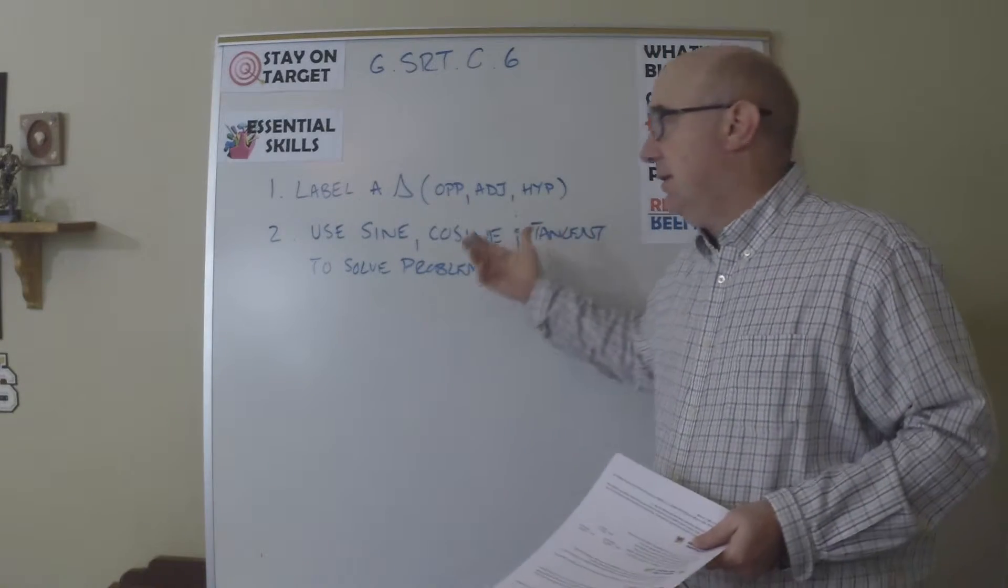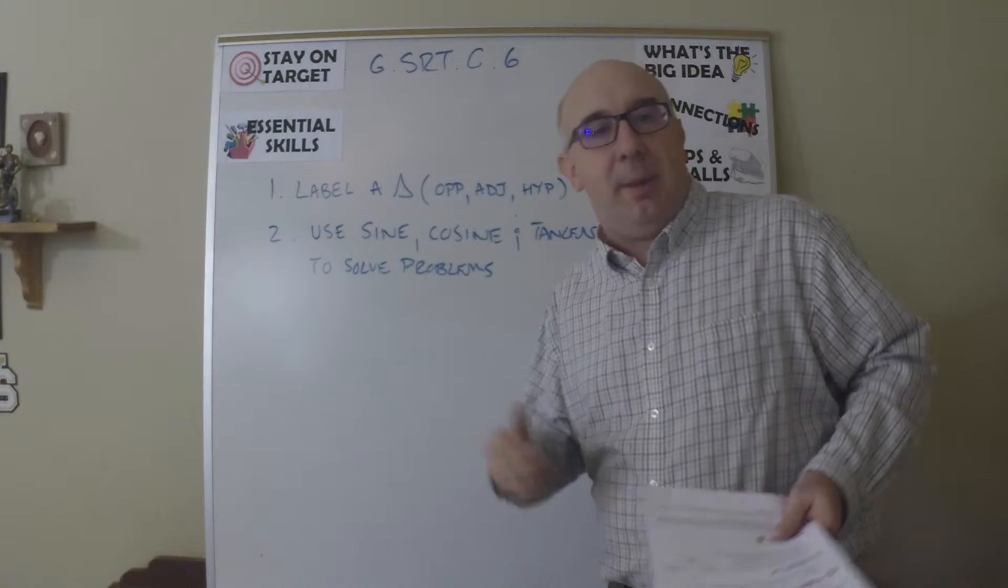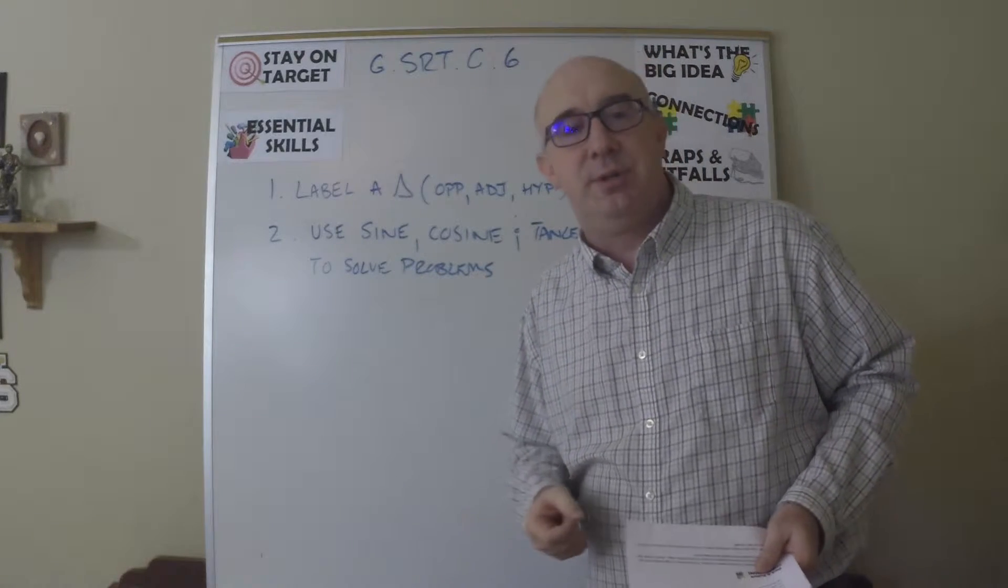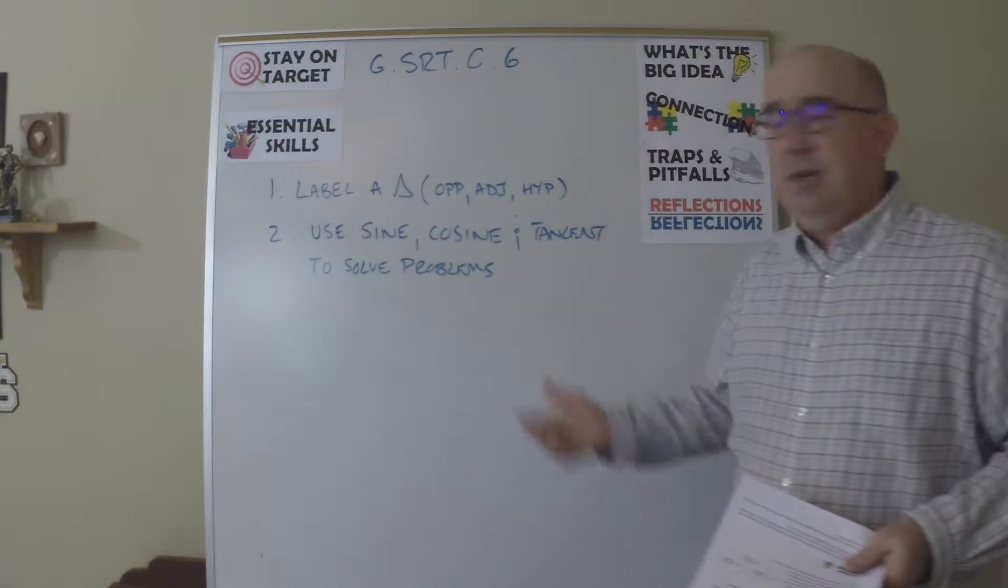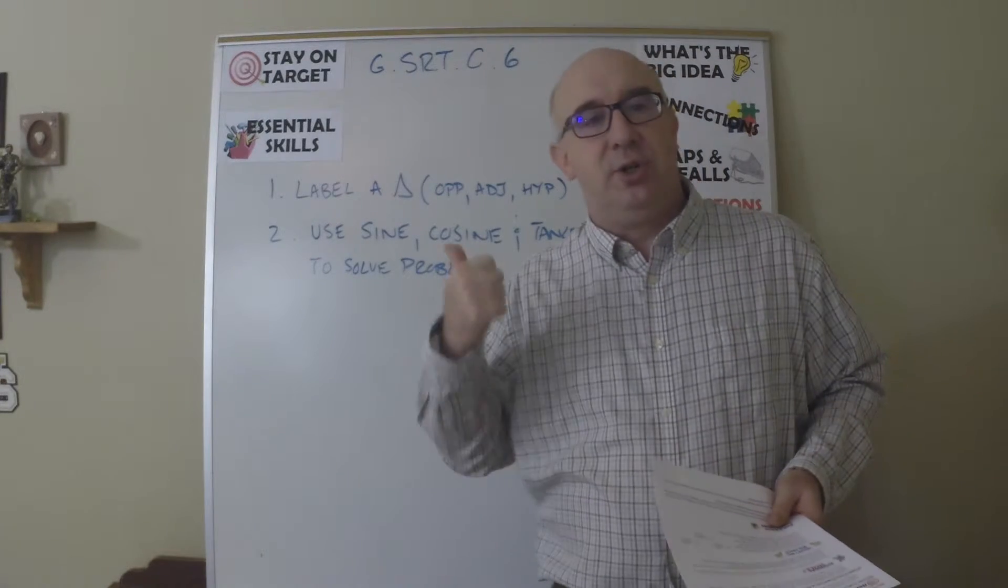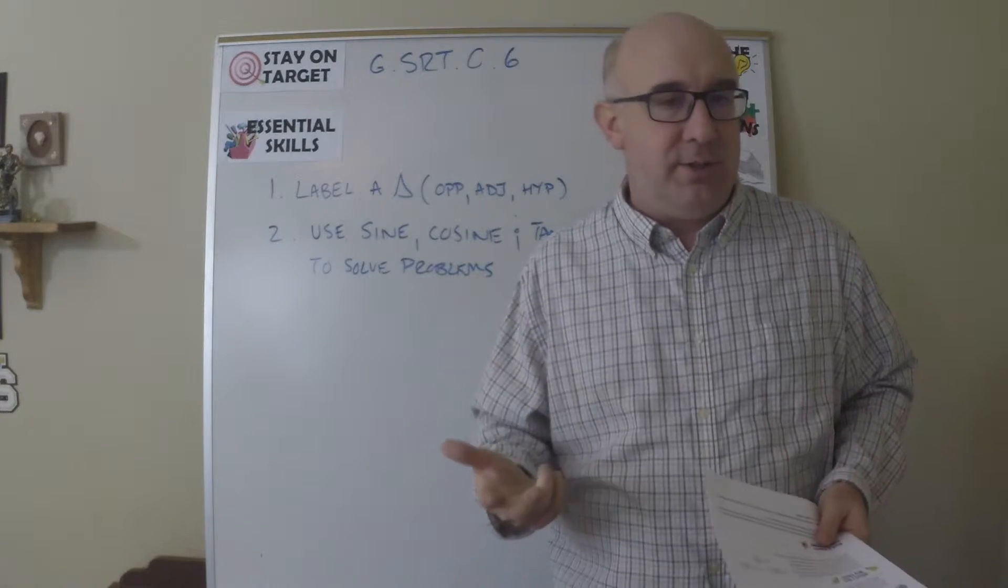So very basic, you're going to learn how to label correctly: opposite, adjacent, hypotenuse. You're going to be able to determine which is the reference angle and then introduce what is the sine ratio, the cosine, and the tangent ratio.